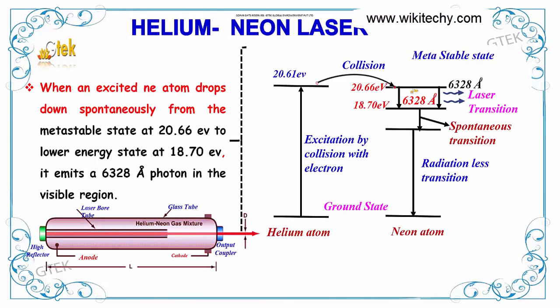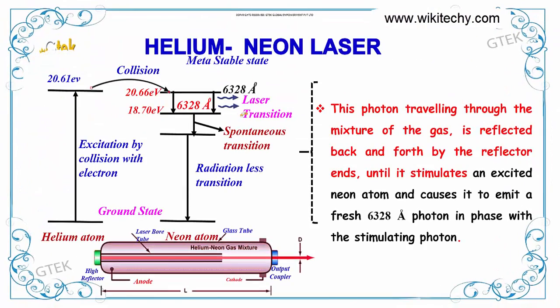When an excited neon atom drops down spontaneously from the metastable state at 20.66 eV to 18.70 eV, it emits a 6328 Angstrom laser in the visible region. This photon traveling through the mixture of gases is reflected back and forth by the reflector ends until it stimulates an excited neon atom and causes it to emit a fresh 6328 Angstrom laser in phase with the stimulating photon.